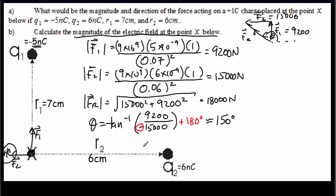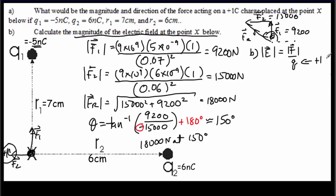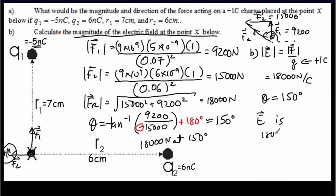So the force is 18,000 newtons at 150 degrees. Now for the electric field: its magnitude equals the force per unit charge. Since our test charge is +1 coulomb, we're just dividing by one — so the electric field has the same value: 18,000, but now in newtons per coulomb. The electric field and the force on a positive charge are always in the same direction, so the angle is also 150 degrees. The electric field is 18,000 newtons per coulomb at 150 degrees.